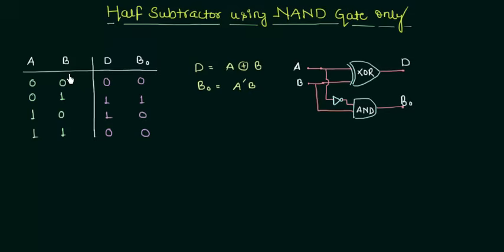Both of them are single bit numbers because it is a half subtractor. It will subtract only a single bit number. And I want to subtract B from A. There are 4 possibilities because there are 2 variables.